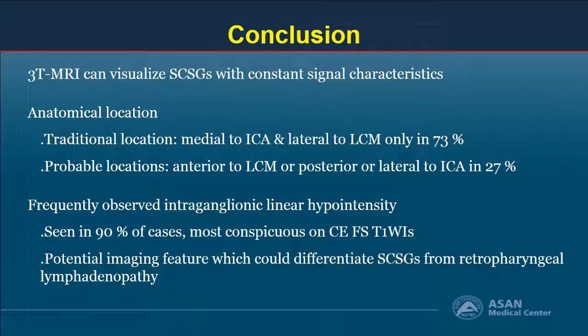In conclusion, it was feasible to demonstrate normal superior cervical sympathetic ganglion on 3T MRI with consistent signal characteristics. Its typical location was observed in only 73%. Intraganglionic linear hypointensity, observed in 90% of all neck sites, could be a potential imaging feature to differentiate them from retropharyngeal lymphadenopathy.